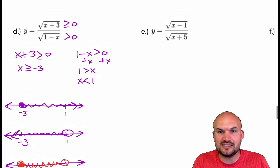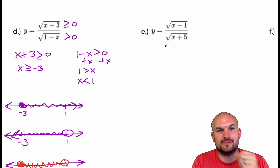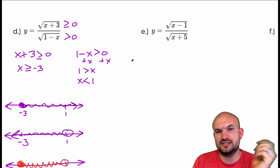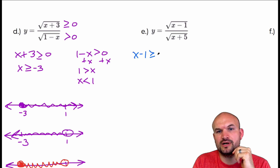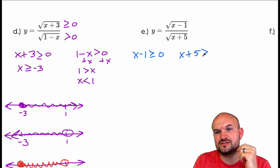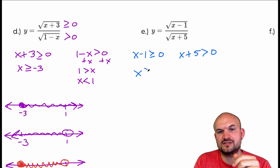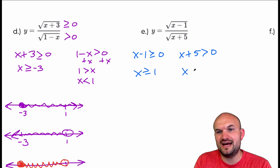The next example looks like the same process: radical in the numerator, radical in the denominator. Setting them up: x minus one is greater than or equal to zero for the numerator radical, and x plus five is strictly greater than zero for the denominator radical. Solving: add one to get x is greater than or equal to one; subtract five to get x is greater than negative five.